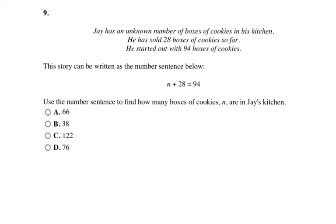So this one says Jay has an unknown number of boxes of cookies in his kitchen. He sold 28 boxes of cookies so far. He started out with 94 boxes of cookies. The story can be written as the number sentence below: N plus 28 equals 94. Use the number sentence to find out how many boxes of cookies N are in Jay's kitchen. So here all they're asking us to do is solve this problem, just like what you did before. It's just this time they add some real world stuff to it so that you can see that this problem actually has a purpose.